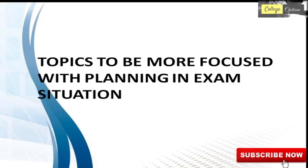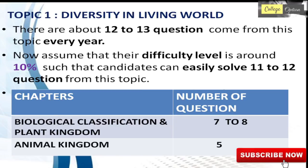The first topic is Diversity in Living World. Around 12 to 13 questions are asked each year from this topic. In difficulty level, it is about 10%. There are two sub-topics: Biological Classification and Plant Kingdom, which can have around 7 to 8 questions, and Animal Kingdom, which can have around 5 questions.